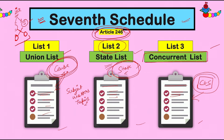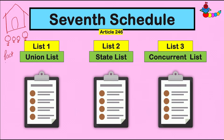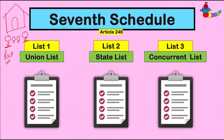अब हम चलते हैं Doctrine of Pith and Substance को समझने। इसके लिए आपको imagine करना पड़ेगा एक घर। इस घर में रहते हैं मम्मी, पापा और दो बच्चे। अब मम्मी-पापा ने एक pact बनाया हुआ है — एक deal हुआ है। कुछ मुद्दे ऐसे होंगे बच्चों से related जिनमें decision making चलेगी पापा की, और कुछ मुद्दे ऐसे होंगे जिनमें decision making चलेगी मम्मी की।